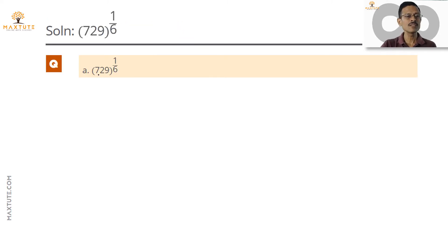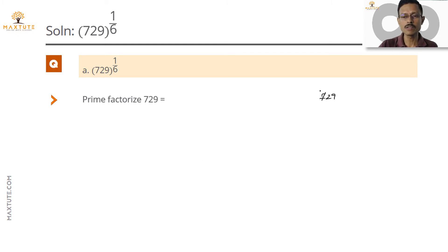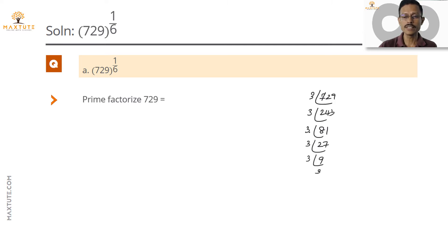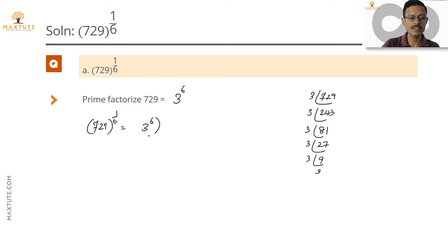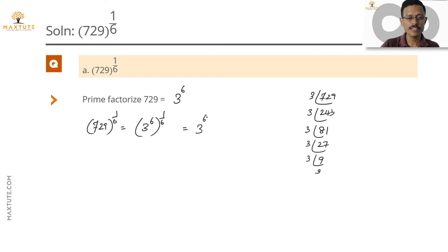Question 1: 729 raised to the power of 1/6. The starting point is prime factorizing 729. Dividing by 3 repeatedly: 729 → 243 → 81 → 27 → 9 → 3 → 1, giving six 3s. So 729 = 3^6. Therefore, 729^(1/6) = (3^6)^(1/6) = 3^(6×1/6) = 3^1 = 3. The answer is 3.